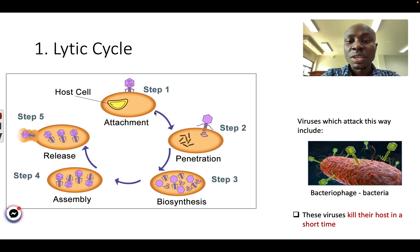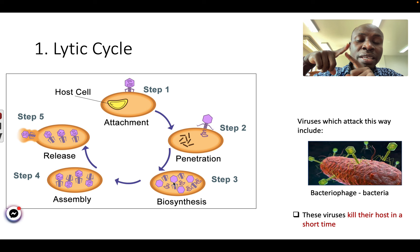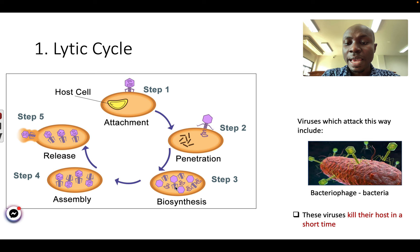Step two: the virus will put its genes — DNA or RNA — inside the host cell. Step three: it will use materials in the host cell to create the different parts of the viruses. If you have DNA, we can use DNA to make messenger RNA, and use messenger RNA to make proteins. We call this biosynthesis. Step four: it will join the different parts together and form new baby viruses.